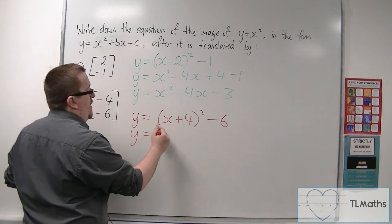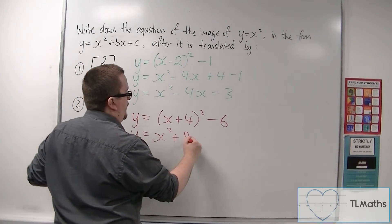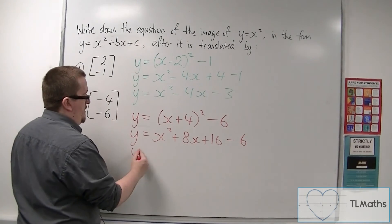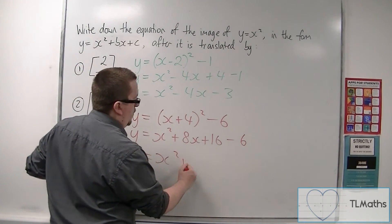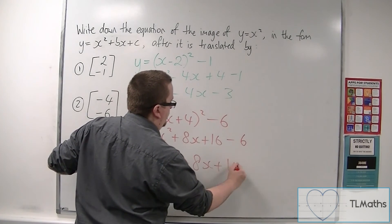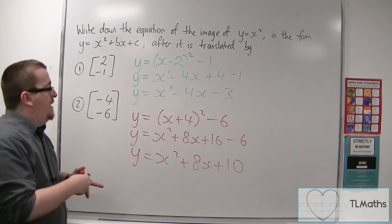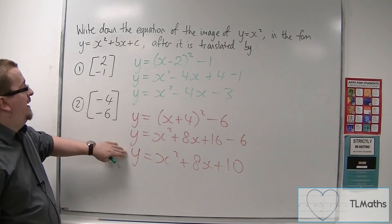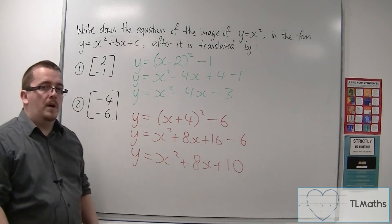So just expand the brackets. x squared plus 8x plus 16. We've still got that minus 6 on the outside. So y is equal to x squared plus 8x plus 10. And so this is the image of y is equal to x squared after it is translated by the vector minus 4 minus 6.